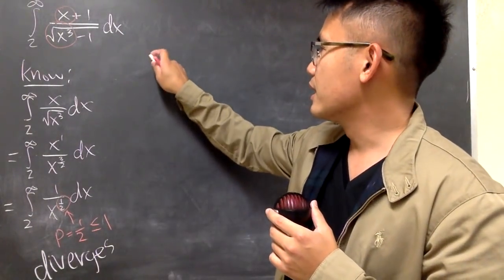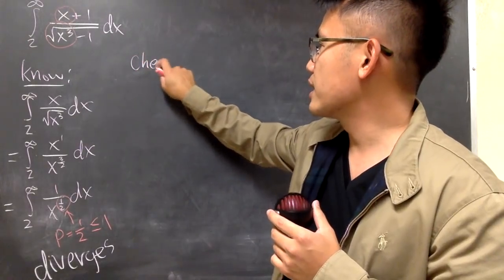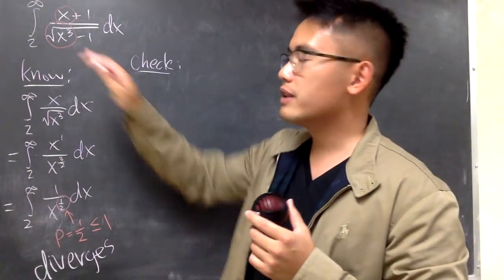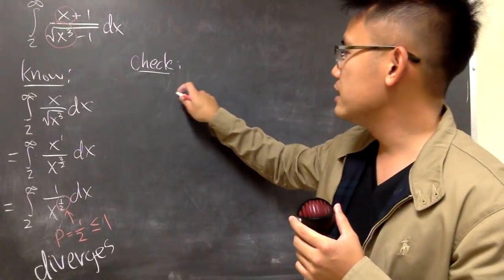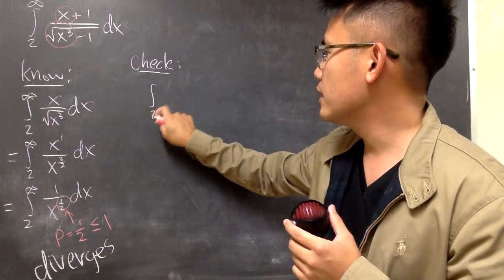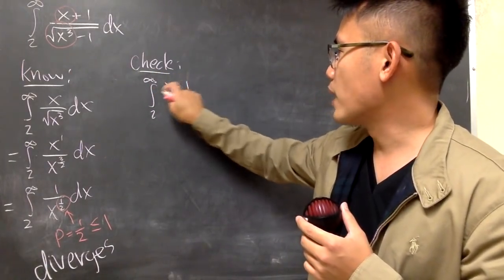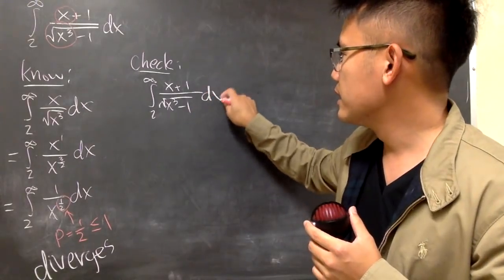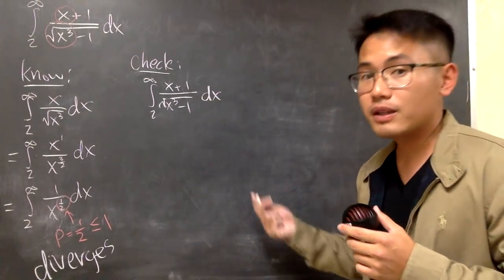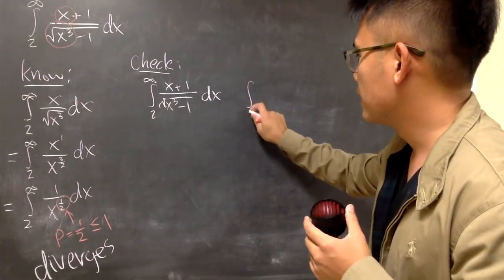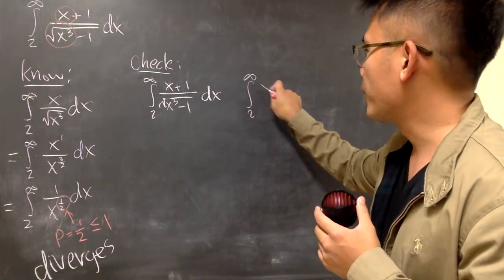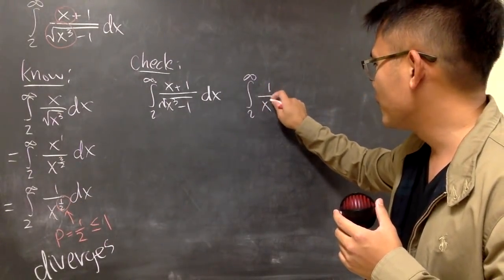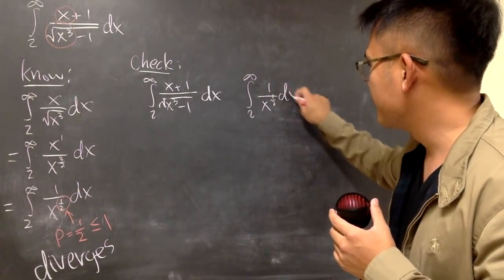Now once you have this, here we are going to do the check. As I will tell you guys, put down the improper integral that you are trying to do on the left hand side. Let me write it down here: 2 to infinity, x plus 1 over square root of x cubed minus 1 dx. And put down the one that you know much better on the right hand side. We are going to make a comparison, and perhaps I will just put it down in this form: 1 over x to the 1 half power dx like this.